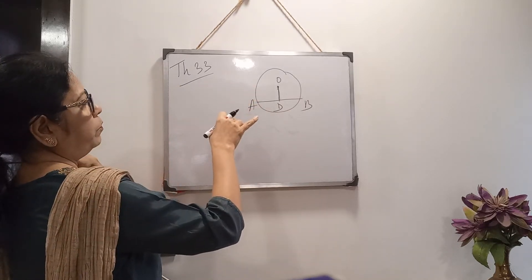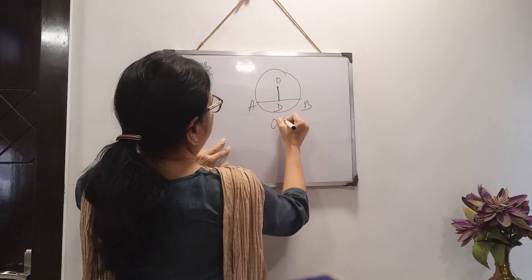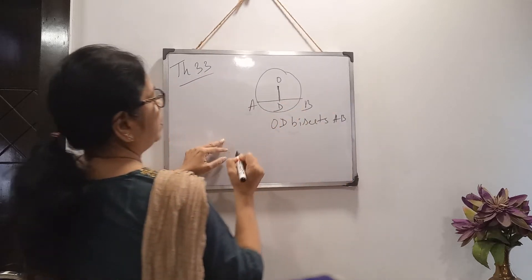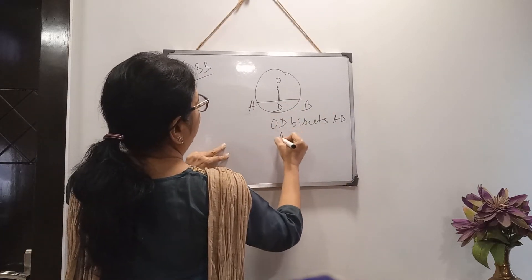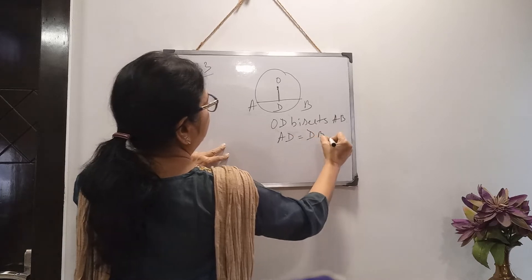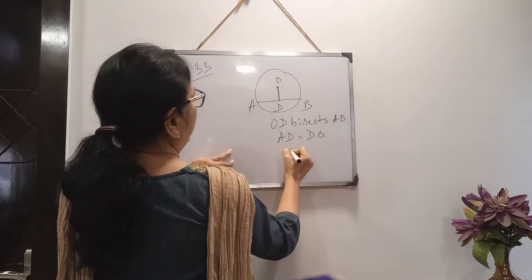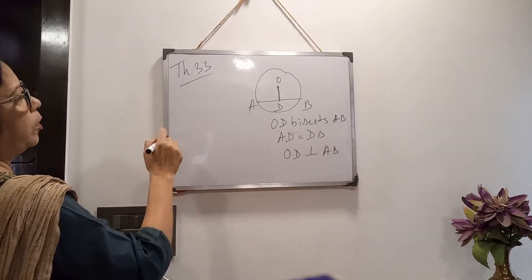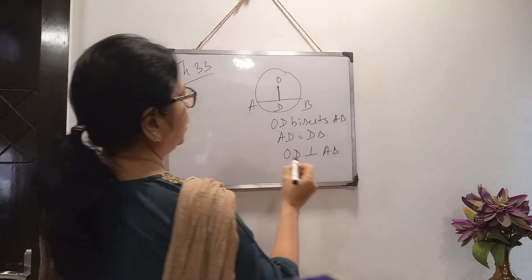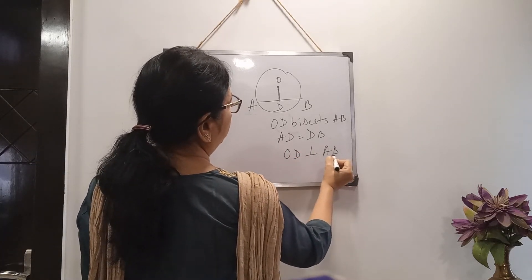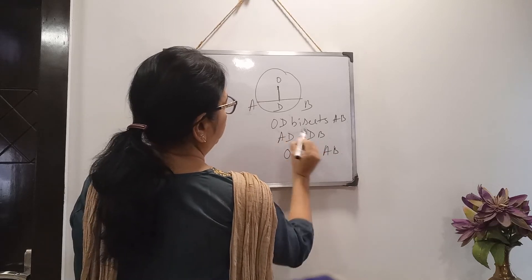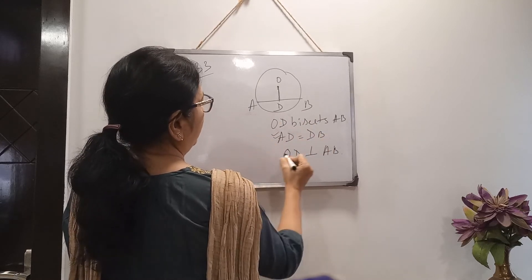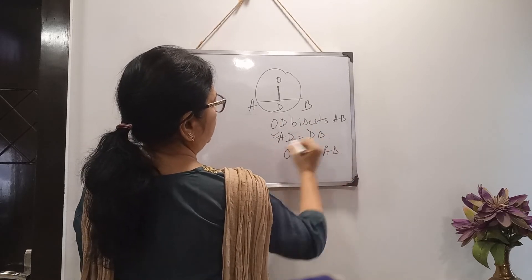In this theorem, it is given that OD bisects AB which is not a diameter, meaning AD equals DB. We have to prove that OD is perpendicular on AB. In theorem 32, OD perpendicular on AB was given and we proved AD equals DB. Now in theorem 33, AD equals DB is given, and we have to prove OD is perpendicular on AB.